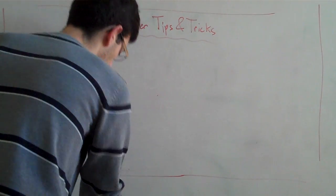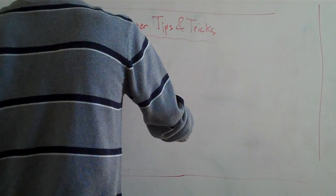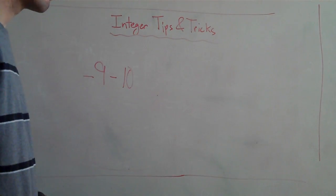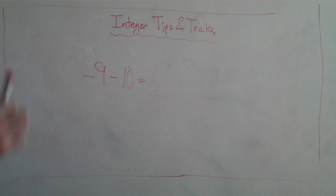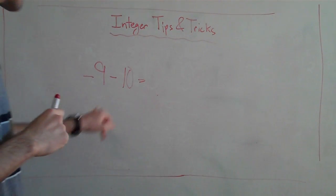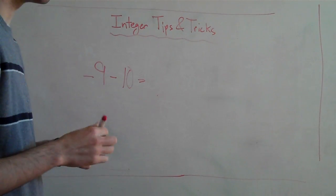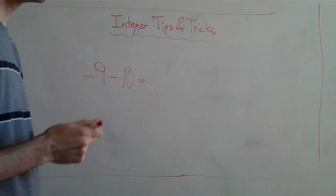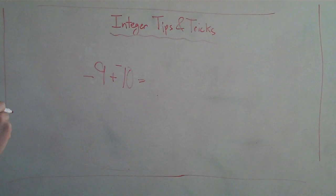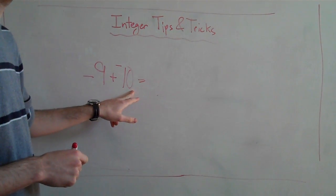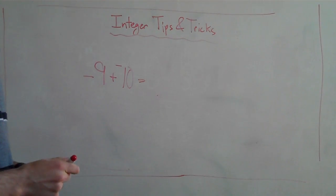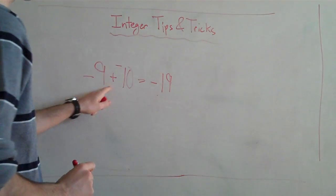Now, let's talk about subtraction — this is where it gets ugly. Negative nine minus ten. We're going to use a really, really helpful trick. If you ever have a minus something, you can change it to plus minus. I had negative nine minus ten, and I changed it to negative nine plus negative ten. Now that's just going to end up being negative nineteen. Isn't that easier to look at? Negative nine plus negative ten.